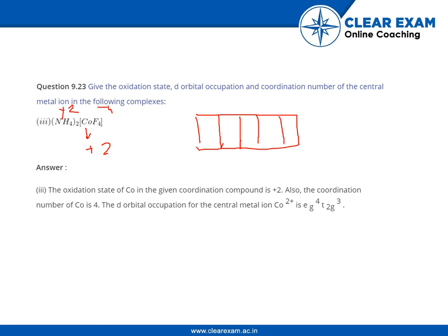Since it is a weak field ligand, just don't pair the electrons. So as you can see, T2G5 and EG2. It is, I guess, given wrong here, so it will be T2G5 and EG2.